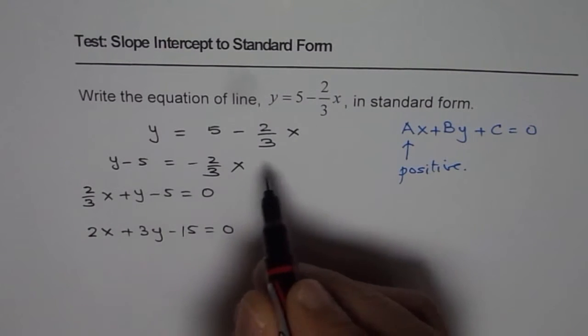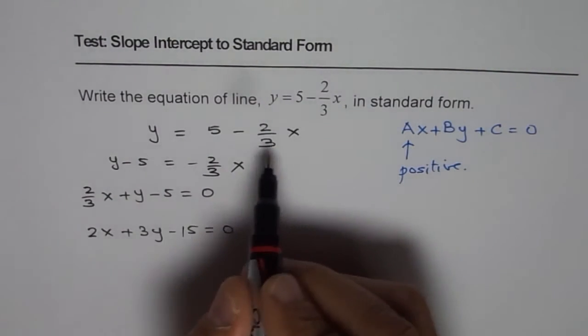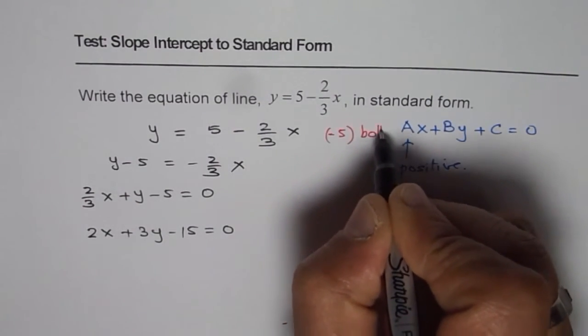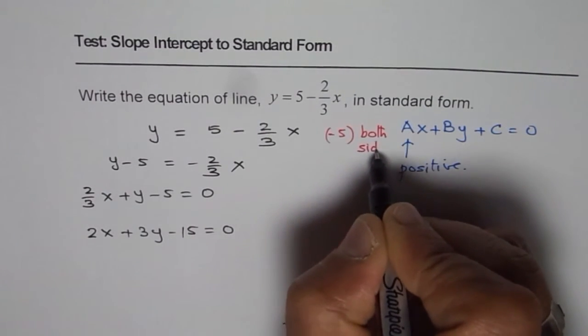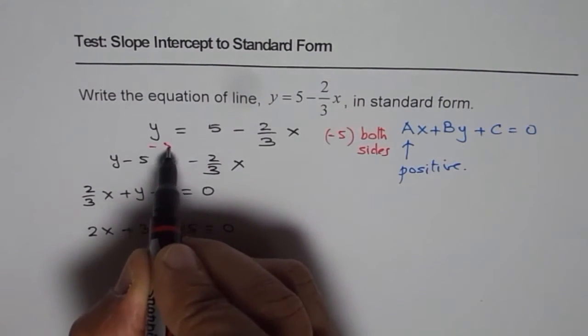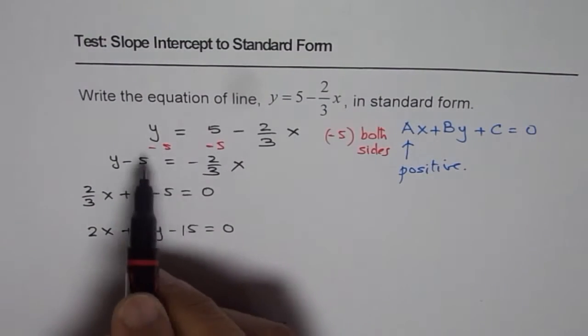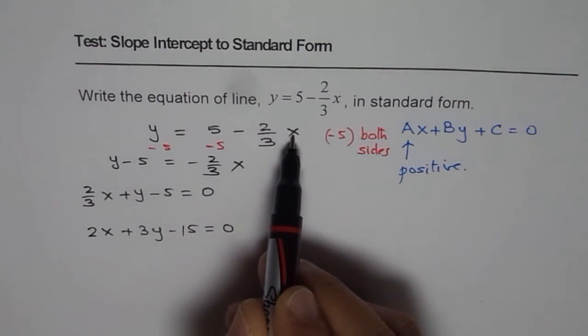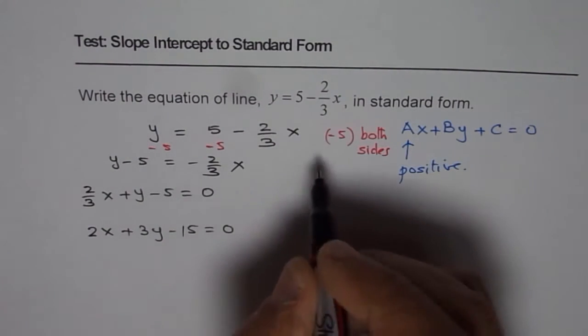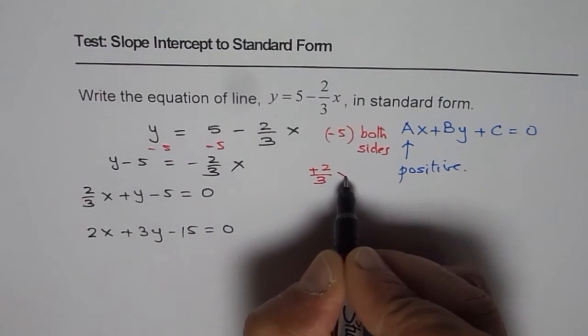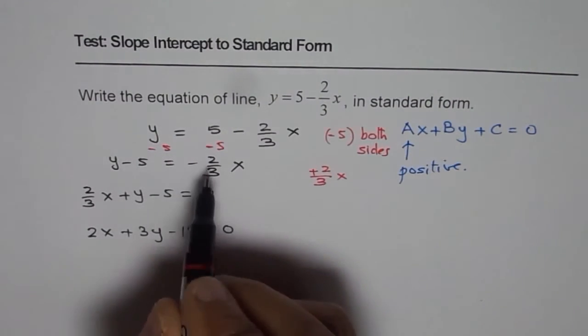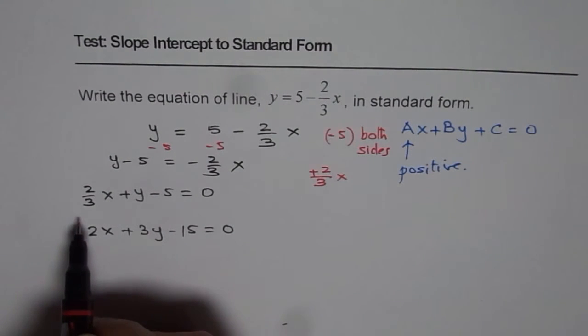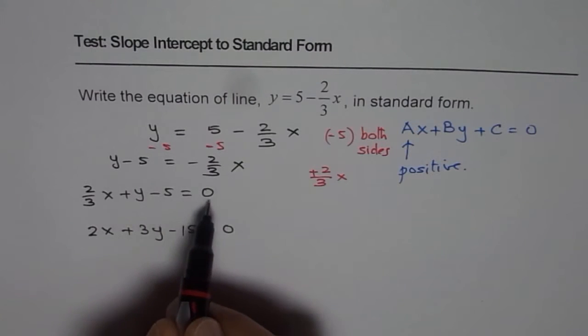The steps involved for us in this way were, first we did minus 5 both sides. Whatever operation you do, you do it on both the sides. When you take away minus 5, that is minus 5 and minus 5, you get y minus 5 on the left side and minus 2 over 3x is left on the right side. Then, you do plus 2 over 3x on both sides. When you add 2 over 3x here, this becomes 0. When you add 2 over 3x here on the left side, you get 2 over 3x plus y minus 5 equals 0.